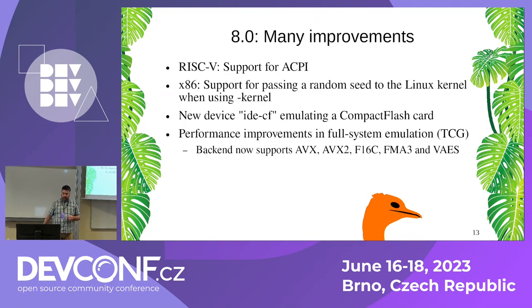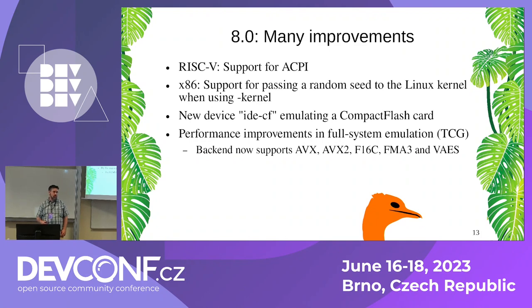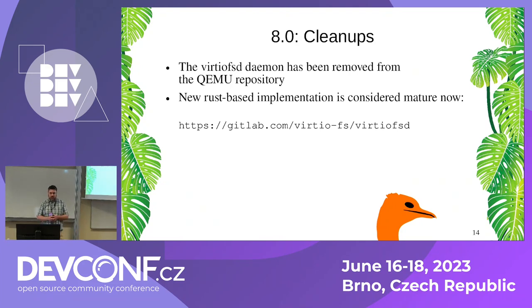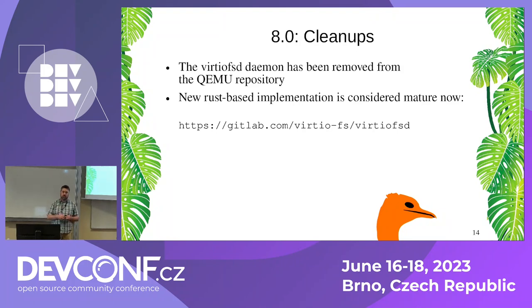QEMU 8.0. There were many improvements again. RISC-V gained support for ACPI. On x86, you can now pass a random seed to the Linux kernel when you load the kernel with the -kernel command of QEMU. There's now support for compact flash card emulation. There have been quite a few performance improvements in TCG — the Tiny Code Generator, the JIT engine of QEMU — which now supports a couple of CPU extensions if they are available. And as always, some cleanups: we removed the virtio-fs daemon from the repository, since there's a new implementation rewritten in Rust that has become quite mature, so the decision was made to remove the old implementation written in plain C.